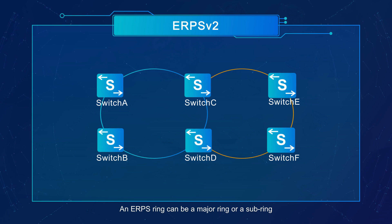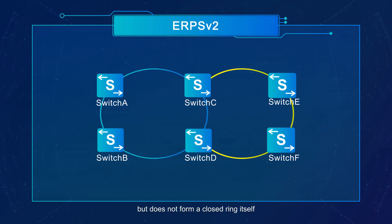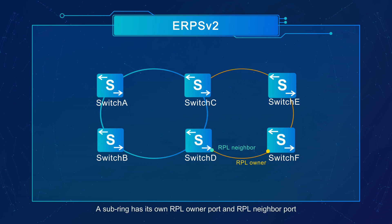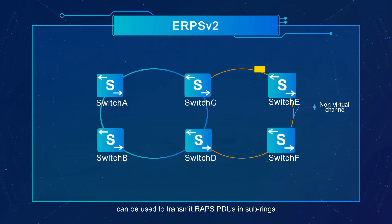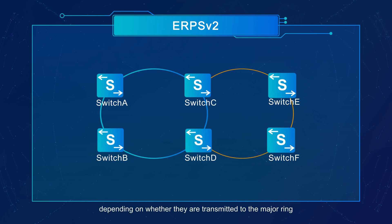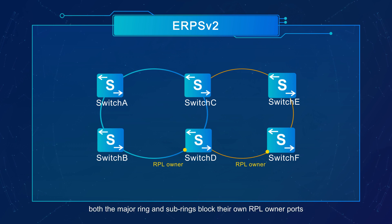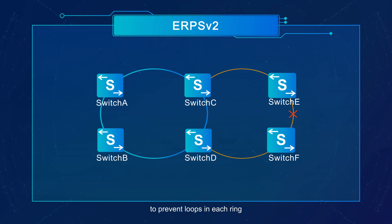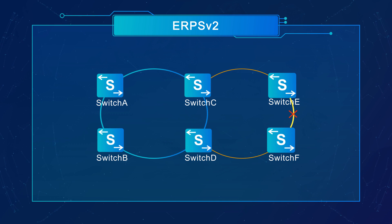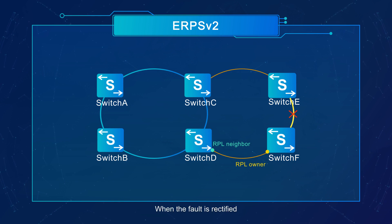An ERPS ring can be a major ring or a sub-ring. A major ring forms a closed ring, whereas a sub-ring connects to a major ring but does not form a closed ring itself. A sub-ring has its own RPL owner port and RPL neighbor port. The virtual channel and non-virtual channel can be used to transmit RAPS PDUs in sub-rings, depending on whether they are transmitted to the major ring. In a multi-ring scenario, both the major ring and sub-rings block their own RPL owner ports to prevent loops. If a link is faulty, the ring where the faulty link resides blocks the ports at both ends of this link, and the RPL owner and RPL neighbor ports are unblocked to ensure normal traffic transmission. When the fault is rectified, you can configure whether to switch traffic back to the original link as required.